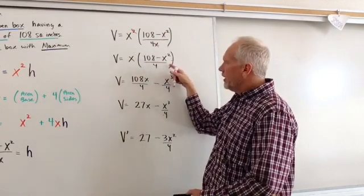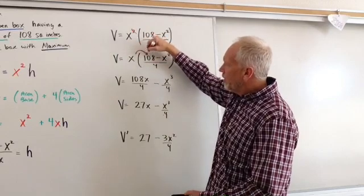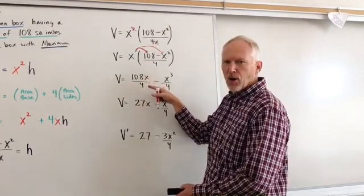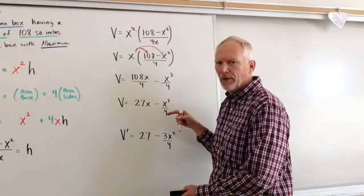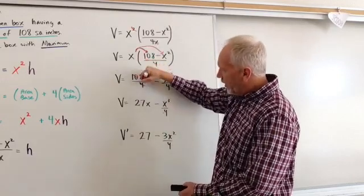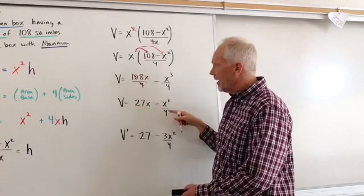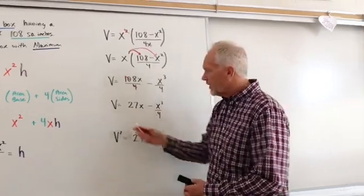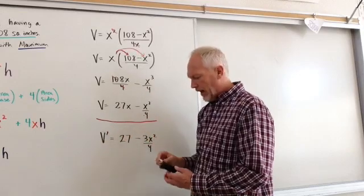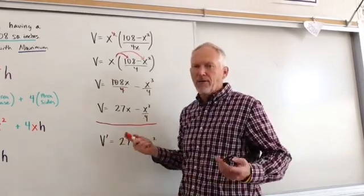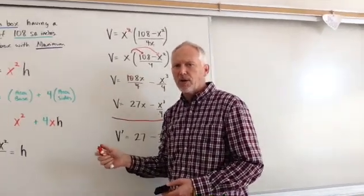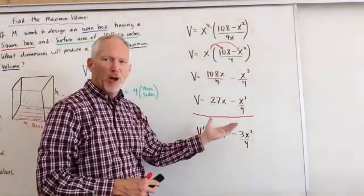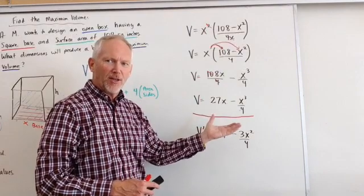Then now what I can do is I can distribute this x accordingly. So if I distribute that, I'll get volume is equal to 108x over 4 minus x cubed over 4. And then I can simplify those. Four goes into 108, 27x minus x cubed divided by 4. Now up until that point, so this is your final volume equation. That is your final volume equation. Only algebra. I haven't even done the calculus yet. So that's why we need to keep that in mind is I haven't even done calculus. All I've done is simply simplify all of the pieces to get it to where I can take the first derivative.